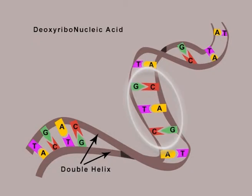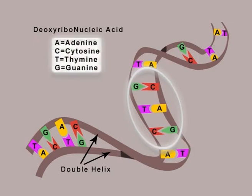The rungs of the ladder are built with a four-letter DNA alphabet: A, C, T and G, where each letter stands for a different base component of DNA. The alphabet pieces always join together in pairs to form the rungs of the ladder. A always pairs with T and C always pairs with G.